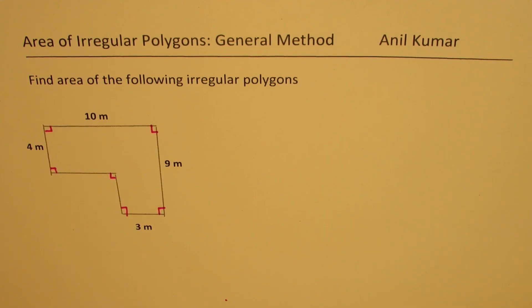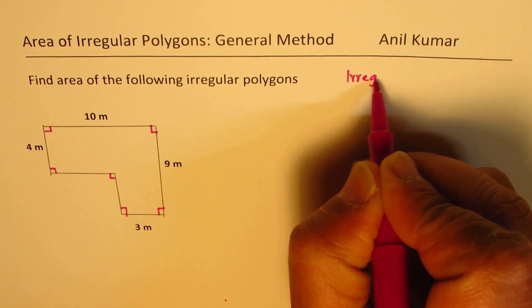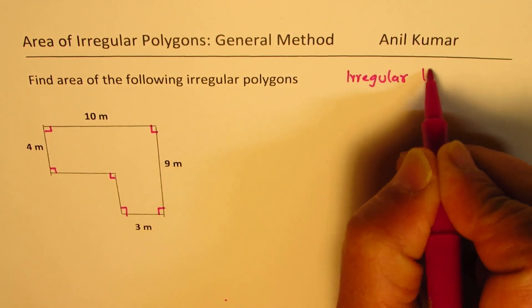I'm Anil Kumar. In this video, we will learn a method to find area of an irregular polygon. So I've taken a very simple example. We have, in this case, one irregular hexagon.